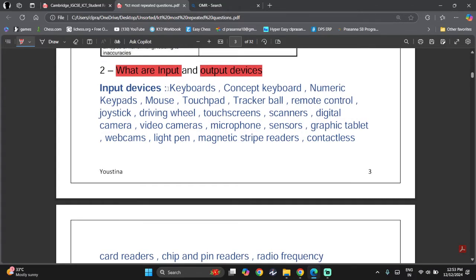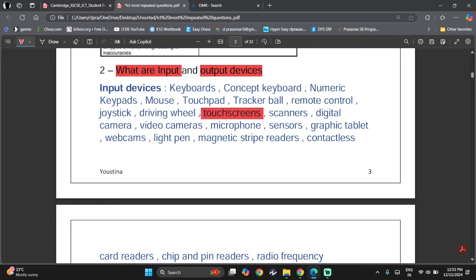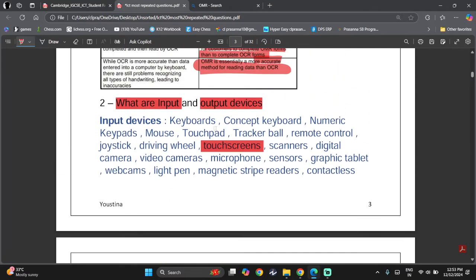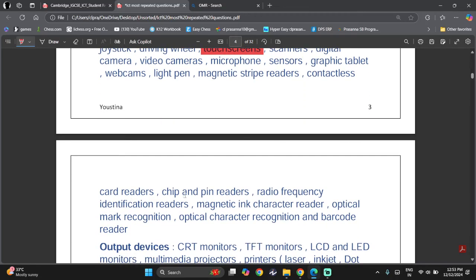So input devices such as keyboard, concept keyboard, numeric keypad, mouse, touchpad, tracker ball, remote control, joystick, driving wheel, touchscreen. Now, touchscreen is both input and output device. Let me see if that would be a touch screen. Yeah. No, but yes, touch screen is both input and output. So then we have scanners, digital camera, video camera, microphone, sensors, graphic tablet, webcams, light pen, magnetic stripe readers, contactless cards, chip and pin, and so on. So all these.